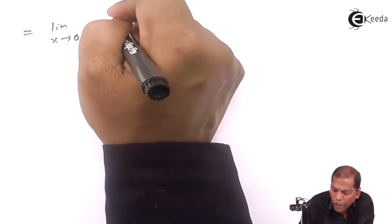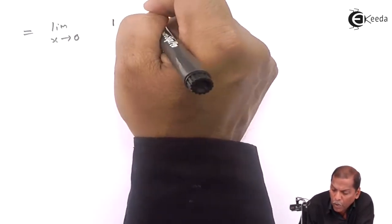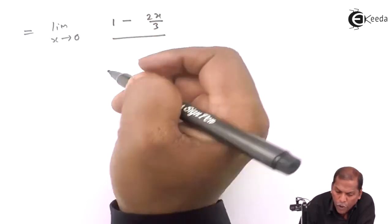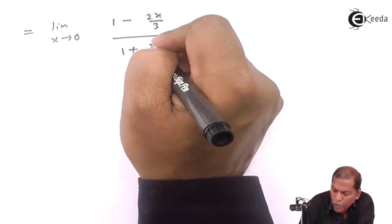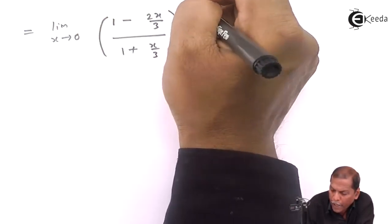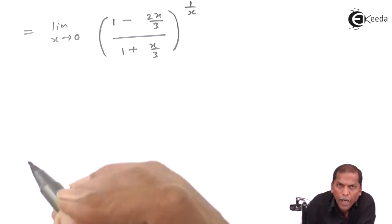now 3 upon 3 gets 1, so (1 minus 2x upon 3) upon (1 plus x upon 3) whole bracket raised to 1 by x.